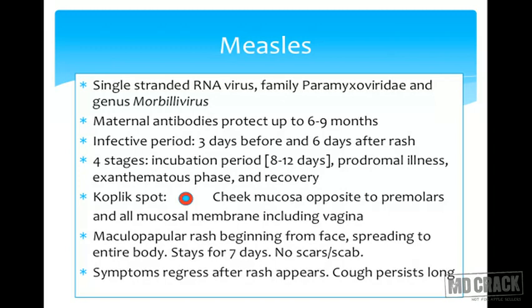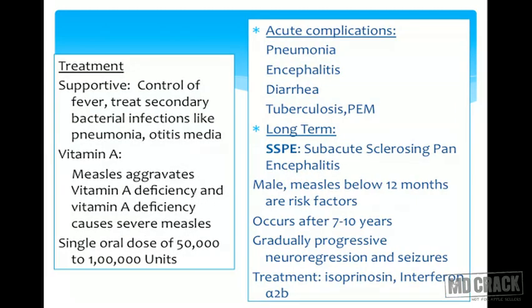The maculopapular rash is the hallmark of measles — a fine rash starting from the face or behind the ears, spreading over the entire body. It lasts seven days — compare this with rubella where rash lasts only three days. There is no scarring or scab formation in measles, though sometimes exfoliation occurs. Treatment is supportive. Vitamin A is supplemented because measles aggravates vitamin A deficiency: 50,000 units for under one year; 100,000 units for over one year — single oral dose. Complications include pneumonia, encephalitis, diarrhea, tuberculosis, and malnutrition.